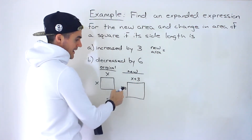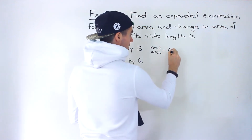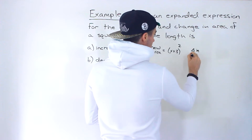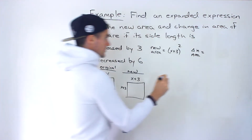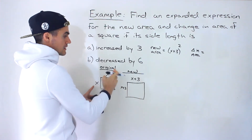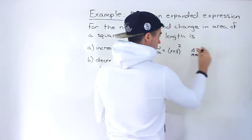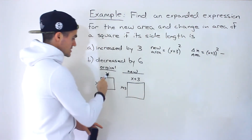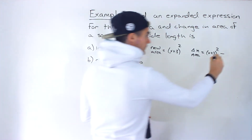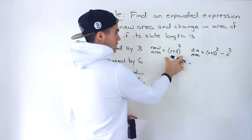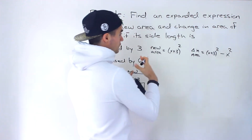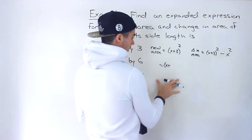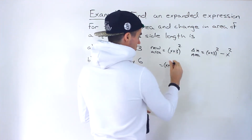The new area is going to be (x + 3)(x + 3), which is just (x + 3) squared. The change in area, as we've discussed in previous problems, is always going to be the new area minus the original area. The new area is (x + 3) squared and the original area is x times x, which is just x squared.